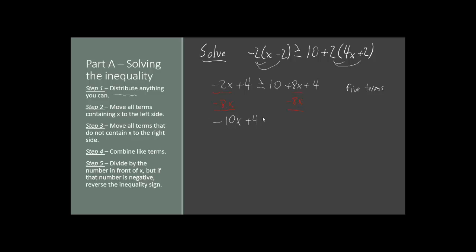Plus 4 is still there. Greater than or equal to is still there. On the right side, the 10 is also still there. The positive 8x and the negative 8x cancel out, and then the plus 4 is still there. That takes care of the x terms.